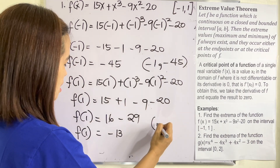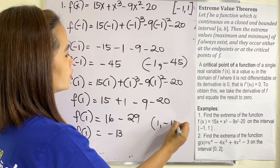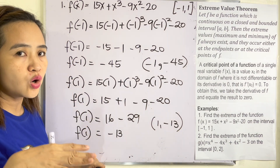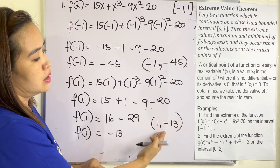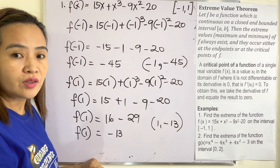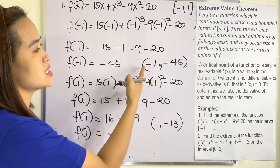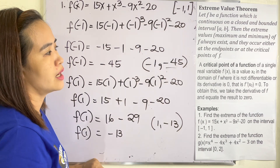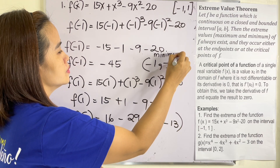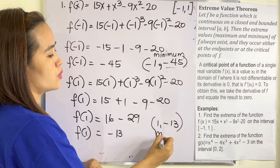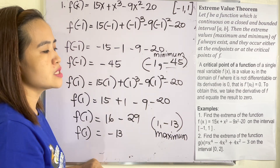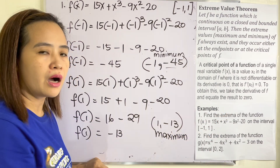Comparing the two points, (−1, −45) and (1, −13): since −45 is lower, the point (−1, −45) is the minimum, and (1, −13) is the maximum. These are the extrema of the function.